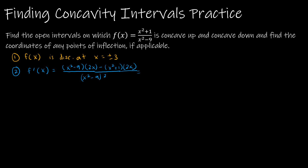After a little cleanup, both values in the numerator have a 2x that I can factor out, leaving x squared minus 9 minus x squared minus 1 — remembering the minus sign means I subtract both terms — all over x squared minus 9, quantity squared. The x squareds cancel, giving negative 10 on the inside, so negative 10 times 2x is negative 20x over x squared minus 9, squared.